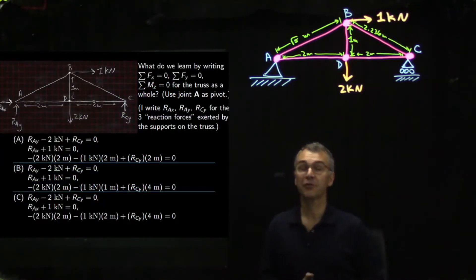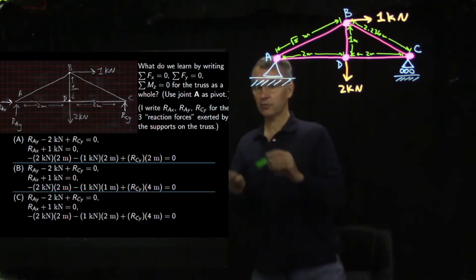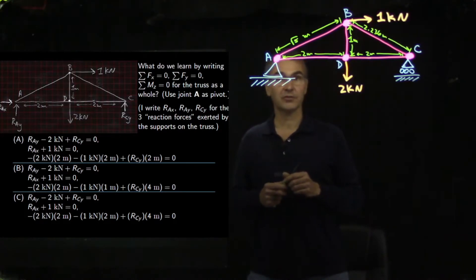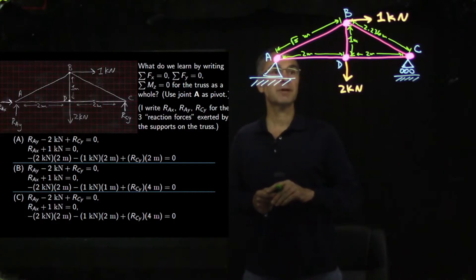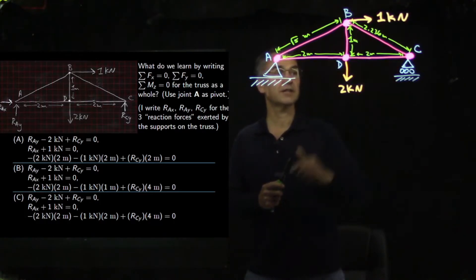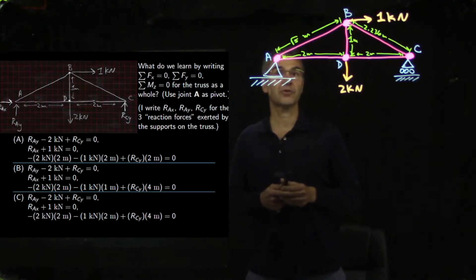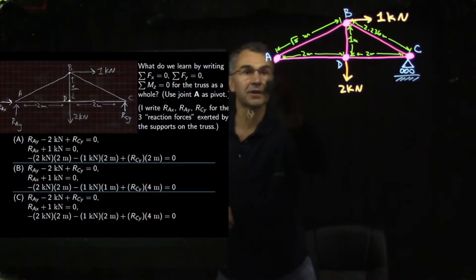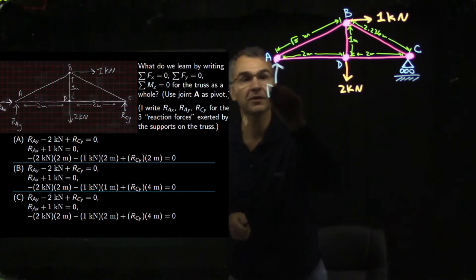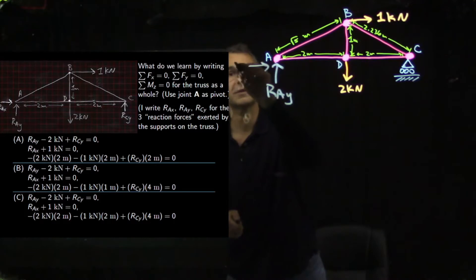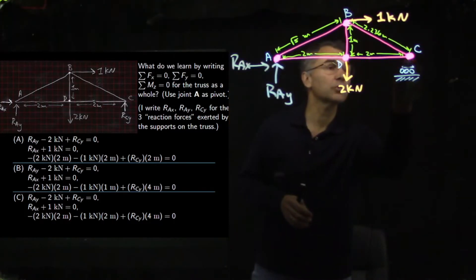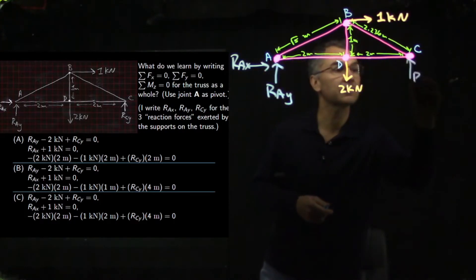We actually get three equilibrium equations for the truss as a whole, and we'll use joint A as our pivot. The nice thing about using A as the pivot is that we can directly write an expression giving the one unknown force at joint C, because the two unknown support forces at A will have zero lever arm when we pivot about A. Let's replace the pin support with two arrows: R-A-Y and R-A-X. At the roller support, we have R-C-Y.